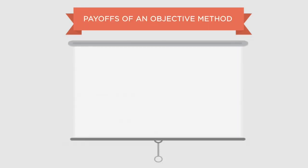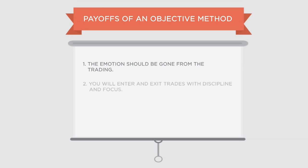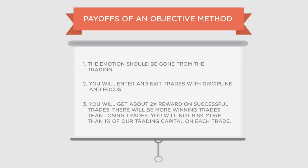The payoff of an objective method is that emotion will be gone from the trading. You will enter and exit trades with discipline, focus, and it will obviously be objective. You'll get about 2 times reward on successful trades. What that means is that if you're risking say 5,000 on a trade, you will aim for 2 times that — that's 10,000 rupees. There will be more winning trades than losing trades, and you won't be risking more than a small portion of your trading capital — not more than 1%.